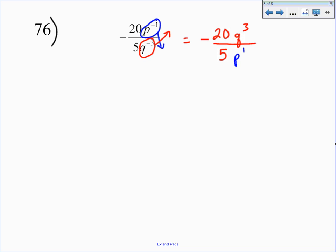Before we can call this finished, we need to finish our simplifying. There's a couple things here. First, 20 divided by 5 gives us 4, so that should be 4q to the third power. And also, p to the first power is just p, so we're going to be left with just p on the bottom. Don't forget the negative out front. Circle it. That's our answer. I hope that helps.